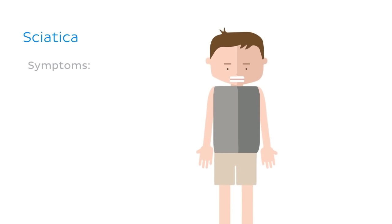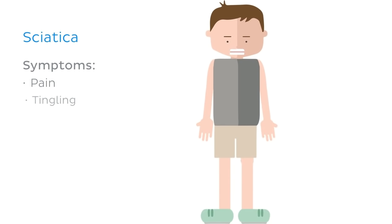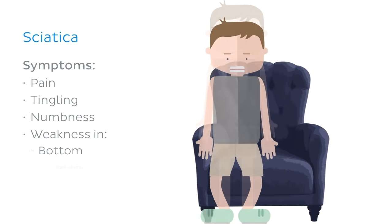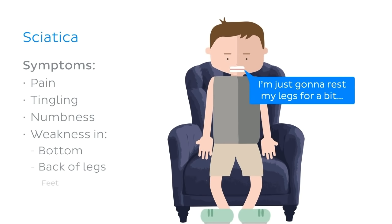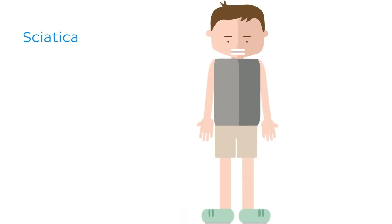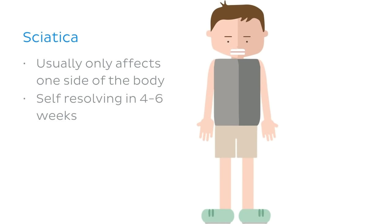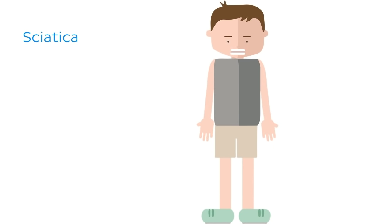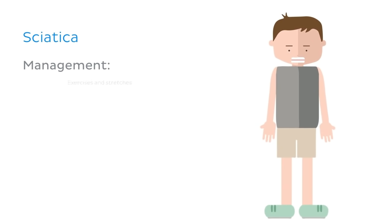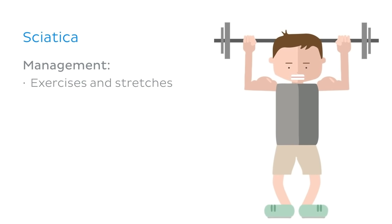Patients may present with pain, tingling, numbness, and weakness in their buttock, the back of their legs, their feet, and even their toes. It's worth noting that sciatica only affects one side of the body. Sciatica will usually resolve itself in four to six weeks, but it can last longer. Symptoms can be managed with exercises and stretches, as well as painkillers.